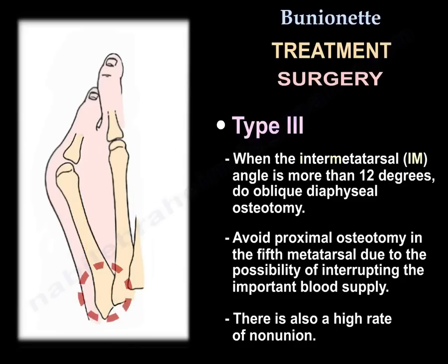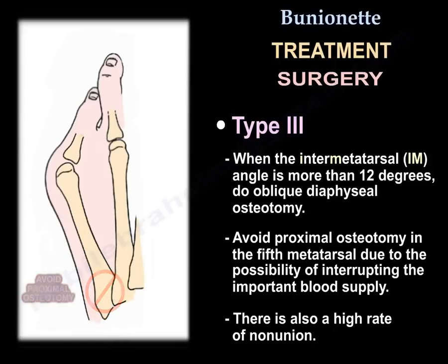You should avoid proximal osteotomy of the 5th metatarsal bone due to the possibility of interrupting the important blood supply, and also because there is a higher rate of non-union.